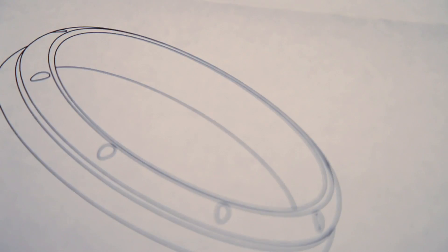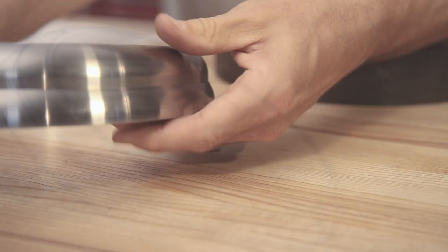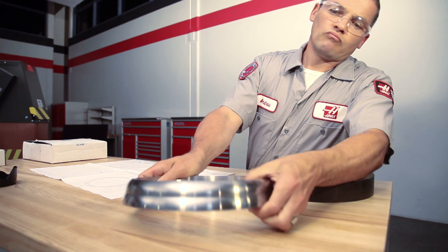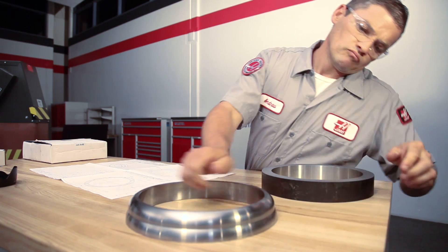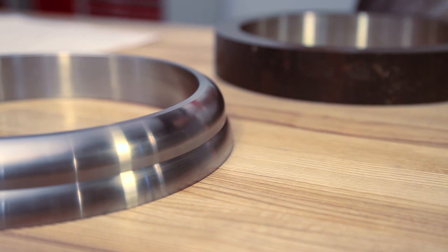Most often, ID gripping jaws are used to hold parts which must be completely profiled on the outside face of the part, or where the OD geometry of the part makes the surface difficult to grip.